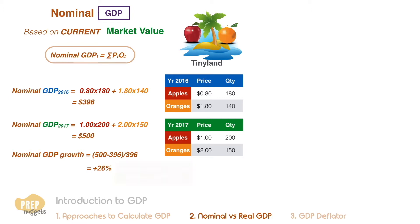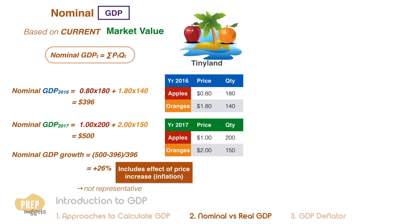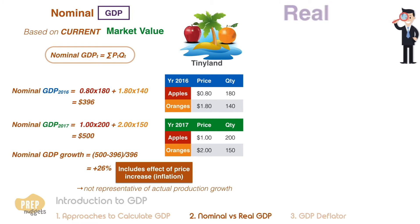As the growth in nominal GDP includes the effect of price increases for the period, this figure is not representative of the actual production growth. Economists prefer to analyse the real GDP growth rate instead, as it strips away the effect of inflation.